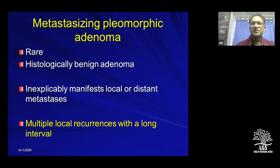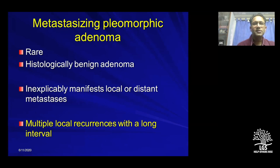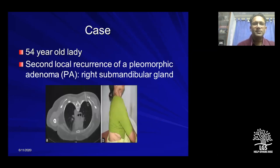There is also a concept called metastasizing pleomorphic adenoma — very rare, described in the literature. Histologically it is a benign pleomorphic adenoma, yet local and distant metastasis are found. It is preceded by multiple local recurrences after long intervals. We managed a 54-year-old lady who presented with her second recurrence of a pleomorphic adenoma of the submandibular gland in 2008.